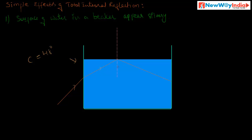So the ray reflects back into the same medium. This reflected ray then strikes the beaker wall and gets refracted out. What happened here is that the light ray strikes the surface of water at more than the critical angle, then it gets total internal reflection.